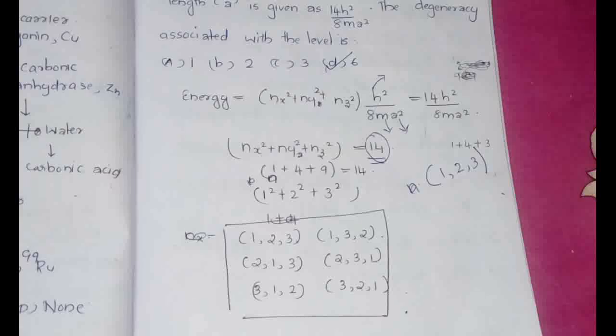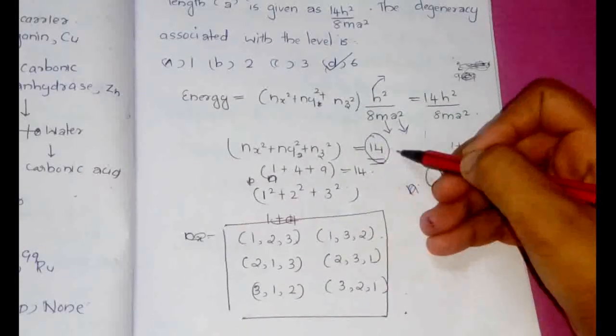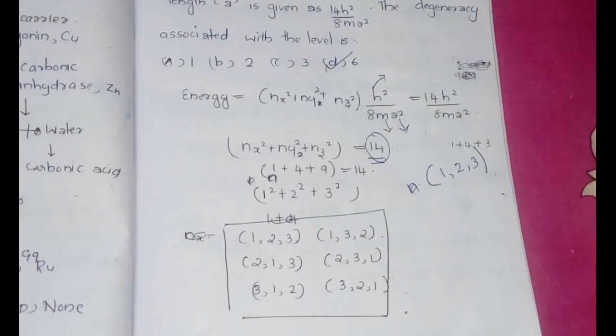I hope you understood. So what we have to do is we have to see, where the cubical box, we have to equate, we have to compare the equation, then we have to find the combination of numbers that will give that particular number. Here in this case that is 14. Then we have to arrange it in such a way that we get the degeneracy of the particular level.